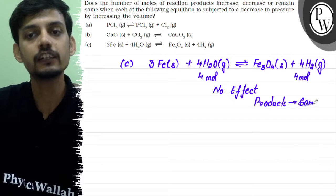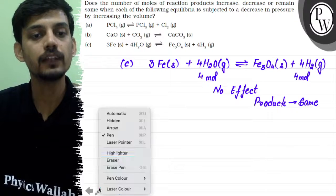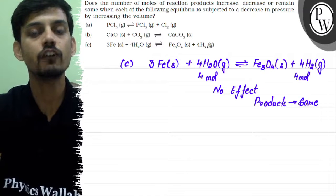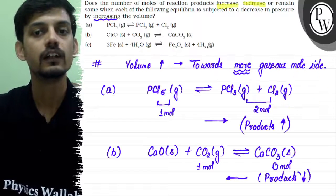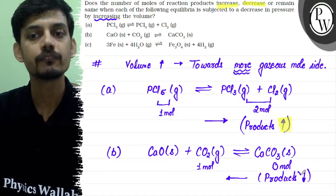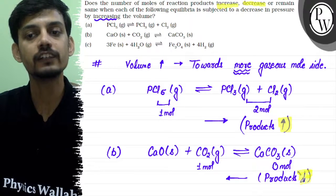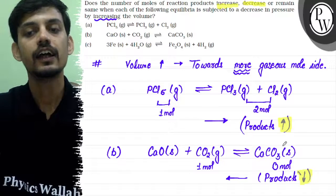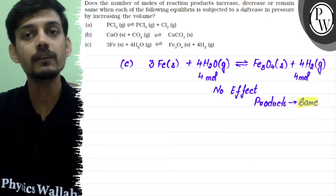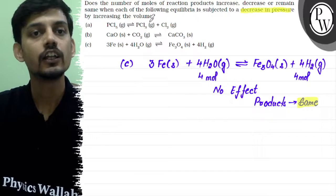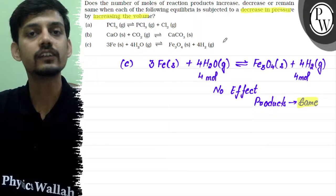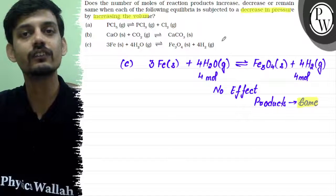So in summary: for the first reaction, the moles of product will increase; for the second reaction, the moles of product will decrease; and for the third reaction, the moles of product will remain the same when pressure is decreased by increasing the volume. Hope this clears the question — best of luck, thank you.